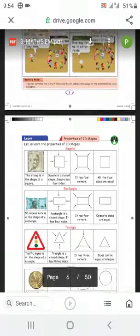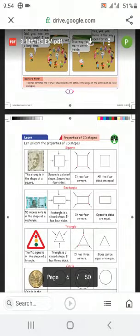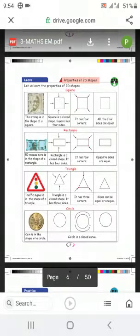First one is square. Square is a closed shape. Square has four sides and four corners. All the four sides are equal. So square is a closed shape, it has four sides and four corners, opposite sides are equal.